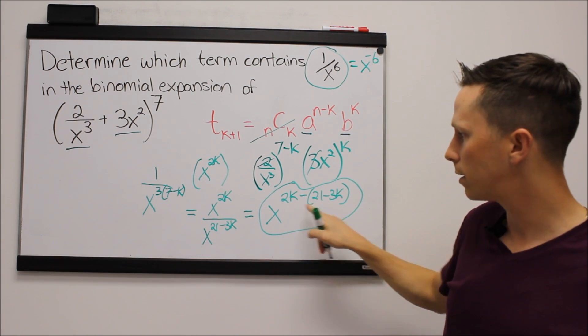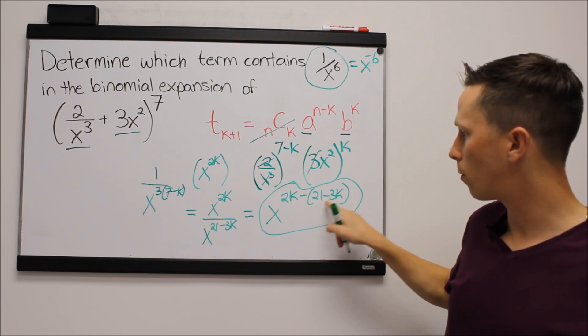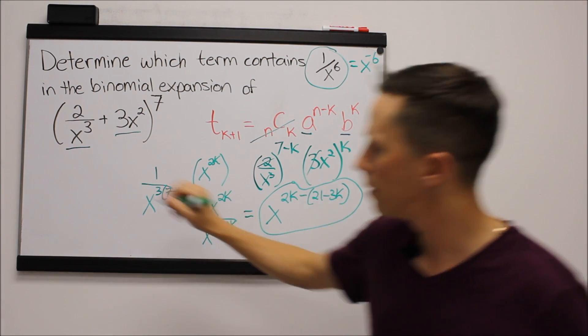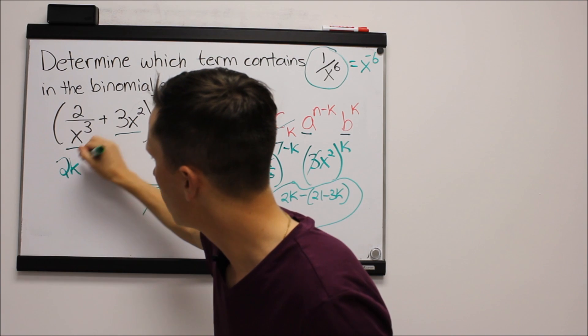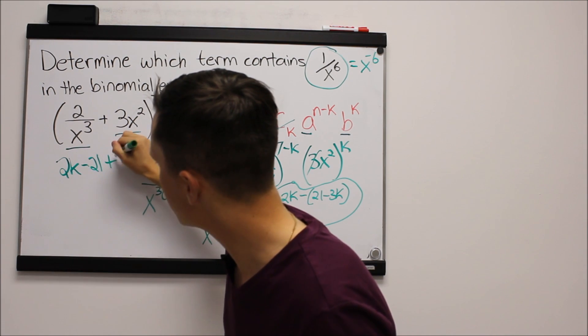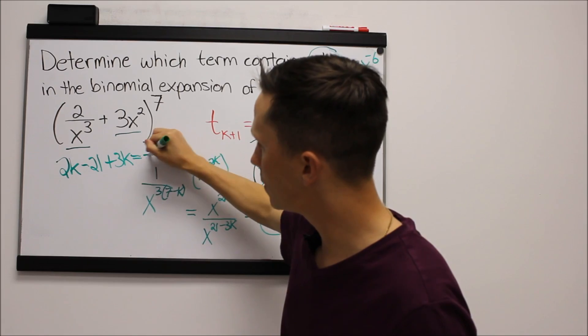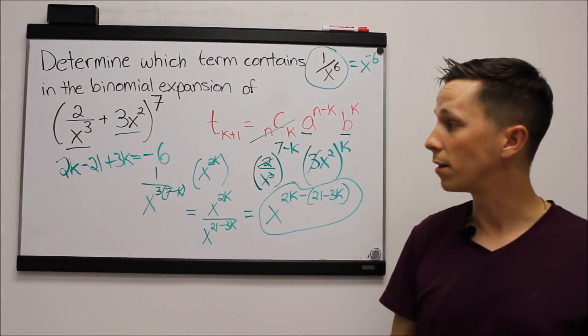So I'm just going to set my exponent, 2k minus 21 plus 3k, to equal negative 6 because that's what we want.